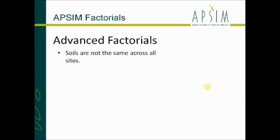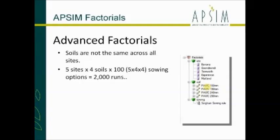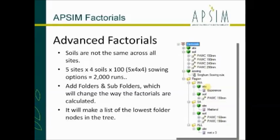Moving on to advanced factorial. Most of you will know that soils are not the same across all sites - we had 47 sites but there aren't going to be four soils used at each. I've set up an example with five sites, four soils, and a sowing rule with 100 different sowing options. Using the checkboxes for a 5x4x4 gave us 2,000 runs. The advanced factorial functionality lets you add folders and subfolders which change the way factorials are calculated. Before, each factor node multiplied with the next - 47 sites by 4 soils multiplied by the number of sowing options.